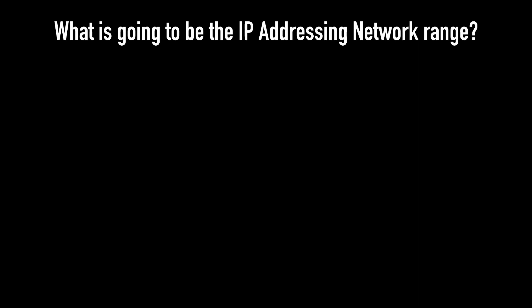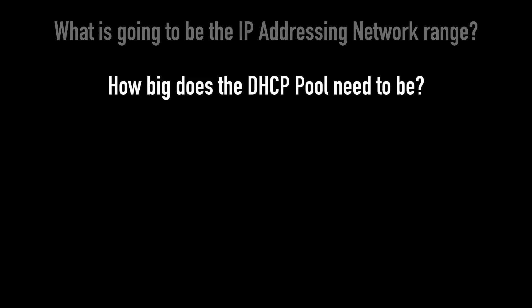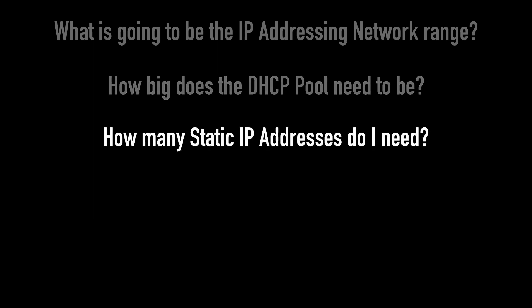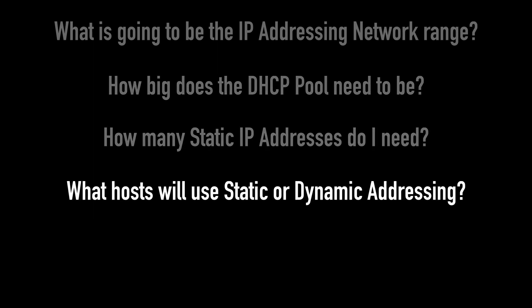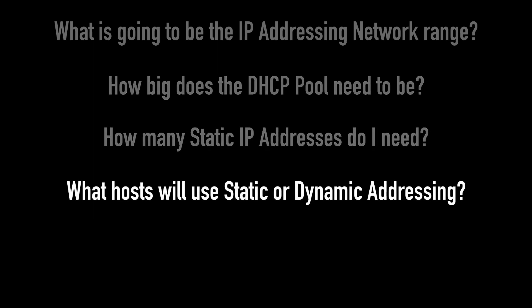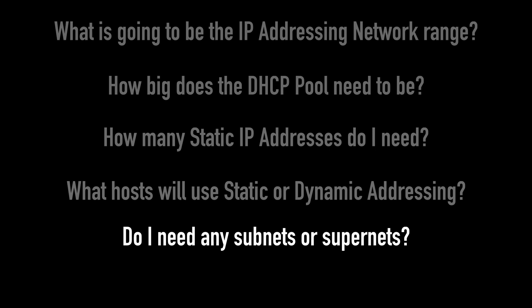One thing I find really important when designing the network is the IP addressing. What is going to be the IP addressing network range? How big does the DHCP pool need to be? Equally, how many static IP addresses do I need? What host devices are going to be using static addressing and what ones are going to be using dynamic addressing? Do I need any subnets or supernets for those additional networks?